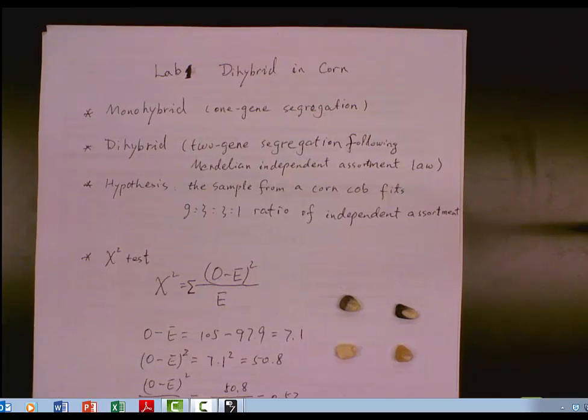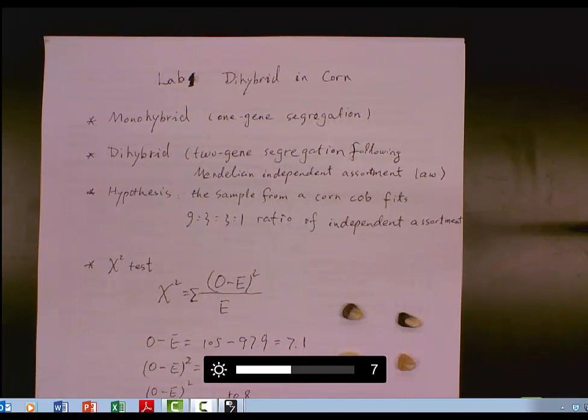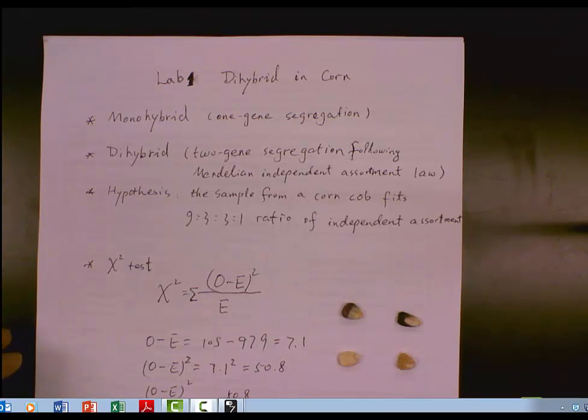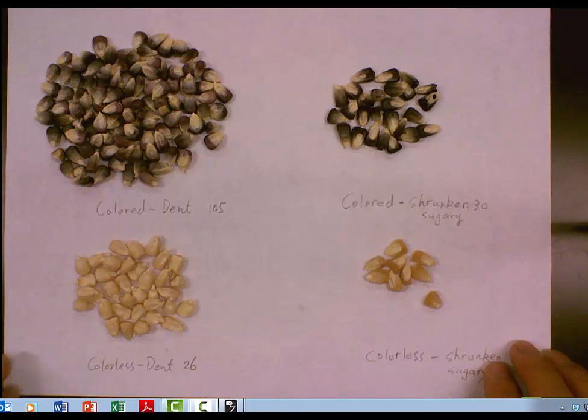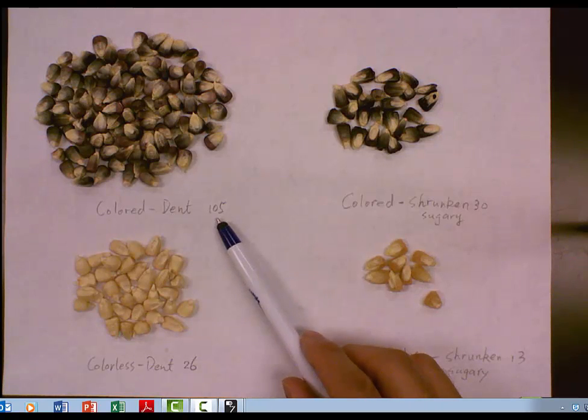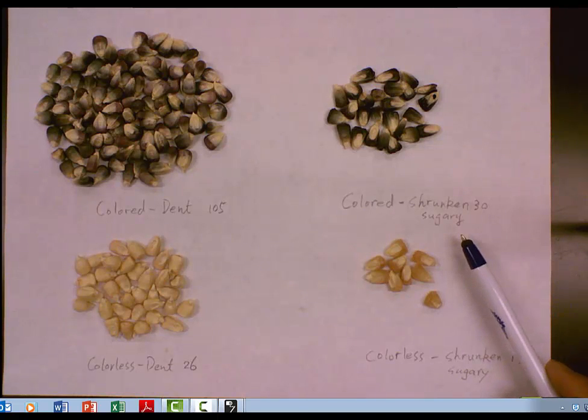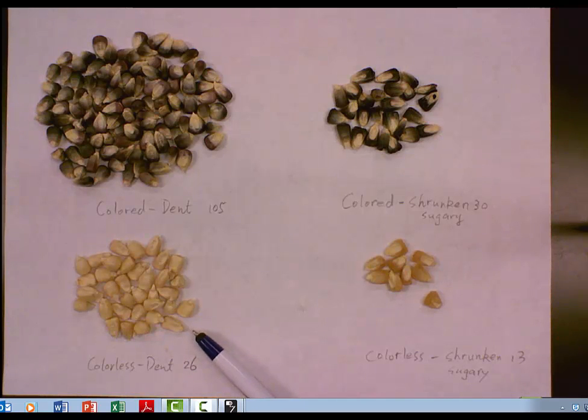A hypothesis is that the sample from the kernel cobs fits 9:3:3:1 ratio of independent assortment. The result I get is four groups. This is colored dent 105 kernels. And this is colored and shrinking 30 kernels. This is colorless dent 26 kernels. And this is colorless shrinking 13 kernels. Those are the observations of the sample from corn cob.